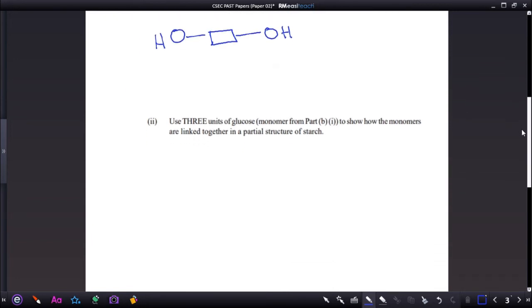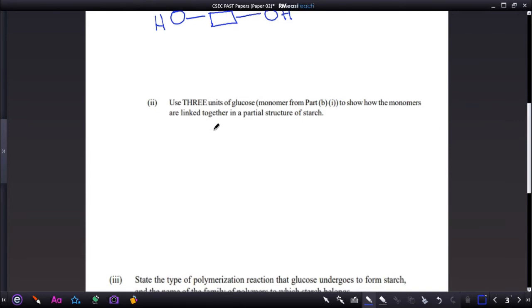Question two: use three glucose units to show how the monomers are linked together in a partial structure of starch. So we need three of these. We have the OH bonded to the rectangular box which represents the rest of the molecule. Now remember that this type of molecule would undergo condensation polymerization, and condensation really means that a small group is removed from the compound throughout the reaction. In this case, that small group is a water molecule.